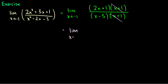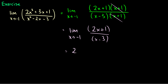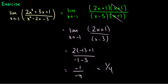The x plus 1 factors cancel, so this is the limit as x goes to negative 1 of 2x plus 1 over x minus 3. We can now plug in negative 1: 2 times negative 1 plus 1 over negative 1 minus 3, which is negative 2 plus 1 = negative 1 over negative 4, which is equal to 1 fourth.